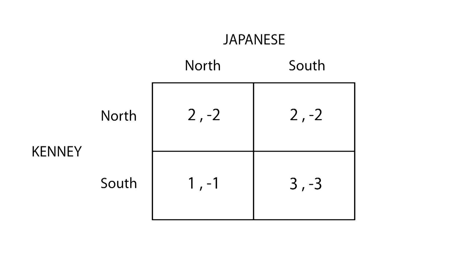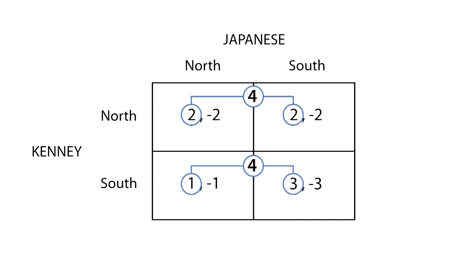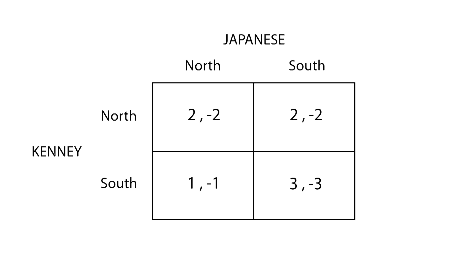In this game, Kenny has no strictly dominant strategy, since the sum of the payoffs of the first strategy (2 + 2) equals the sum of the second strategy (1 + 3). However, the Japanese do have a weakly dominating strategy, which is to go north, since the sum of the payoffs is strictly better. Since only one of them has a dominant strategy, there is no dominant strategy equilibrium.